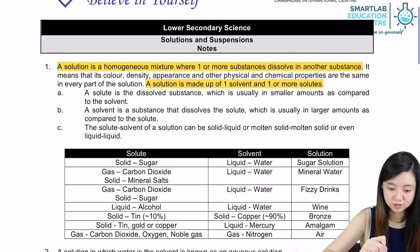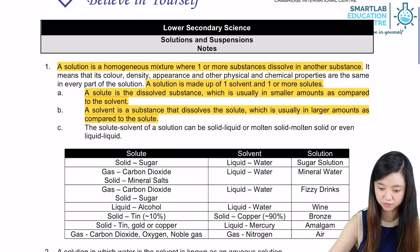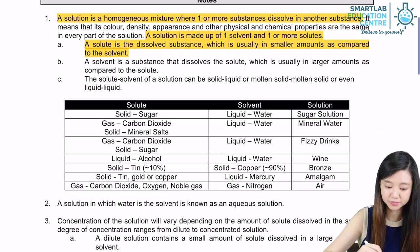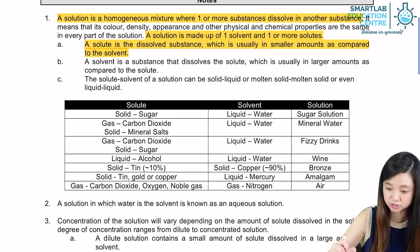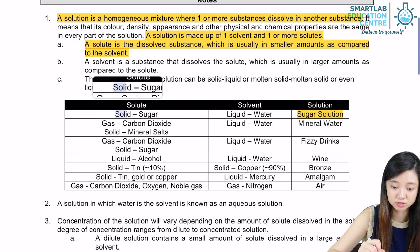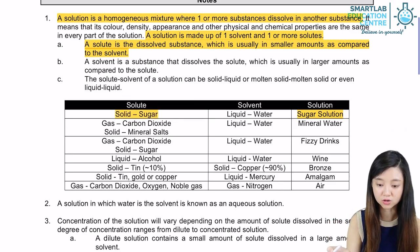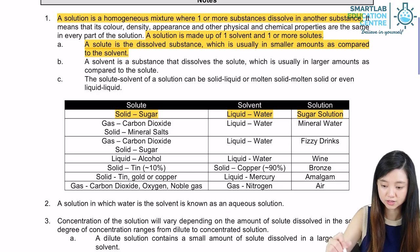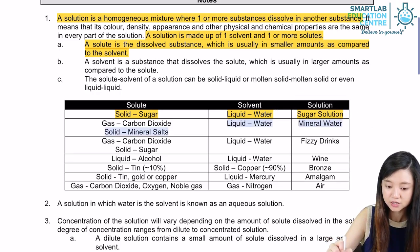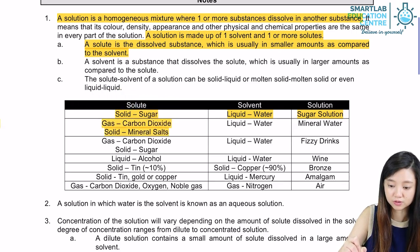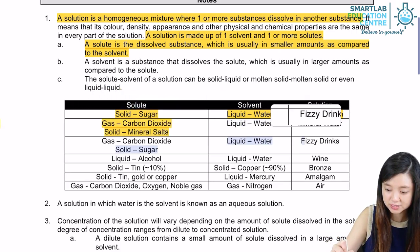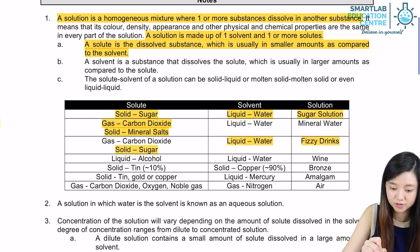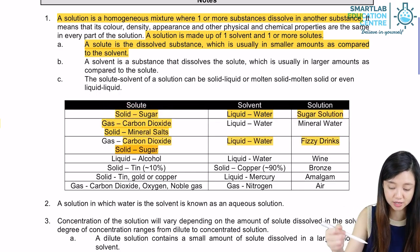There are actually some examples of solutions — we can look at the table below. For example, in a sugar solution, the sugar is our solute while the water is the solvent. For mineral water, the carbon dioxide and mineral salts are the solutes while water is the solvent. For fizzy drinks, carbon dioxide and sugar are the solutes and water is the solvent.